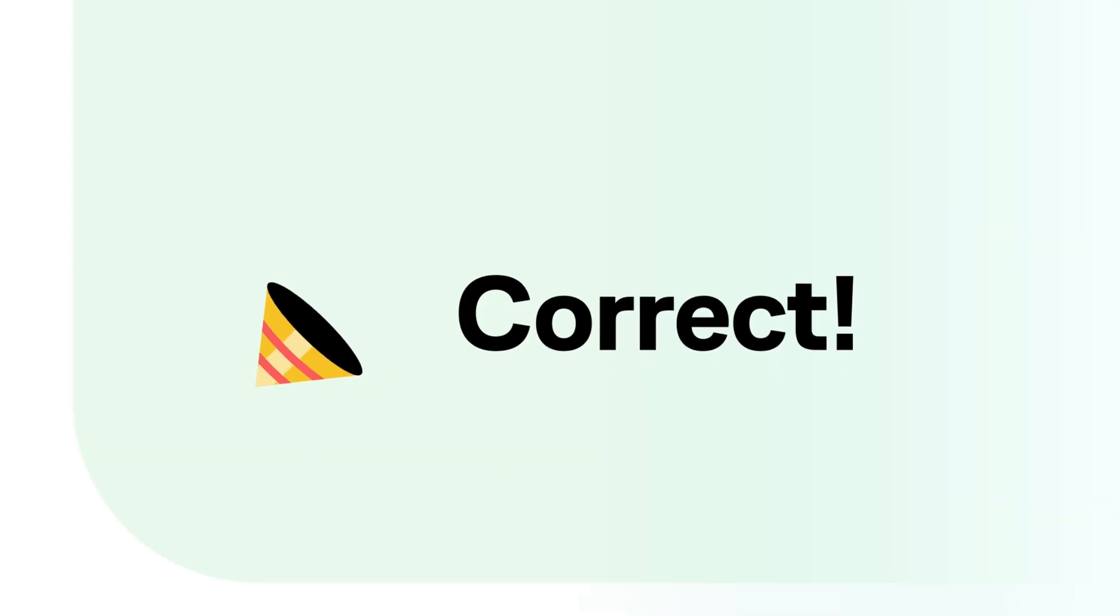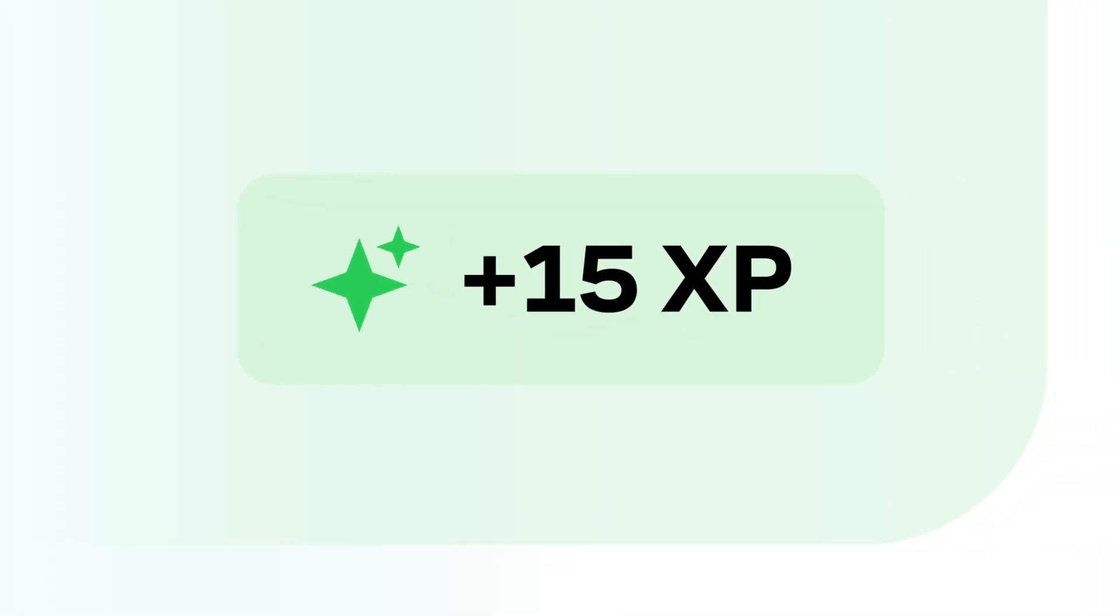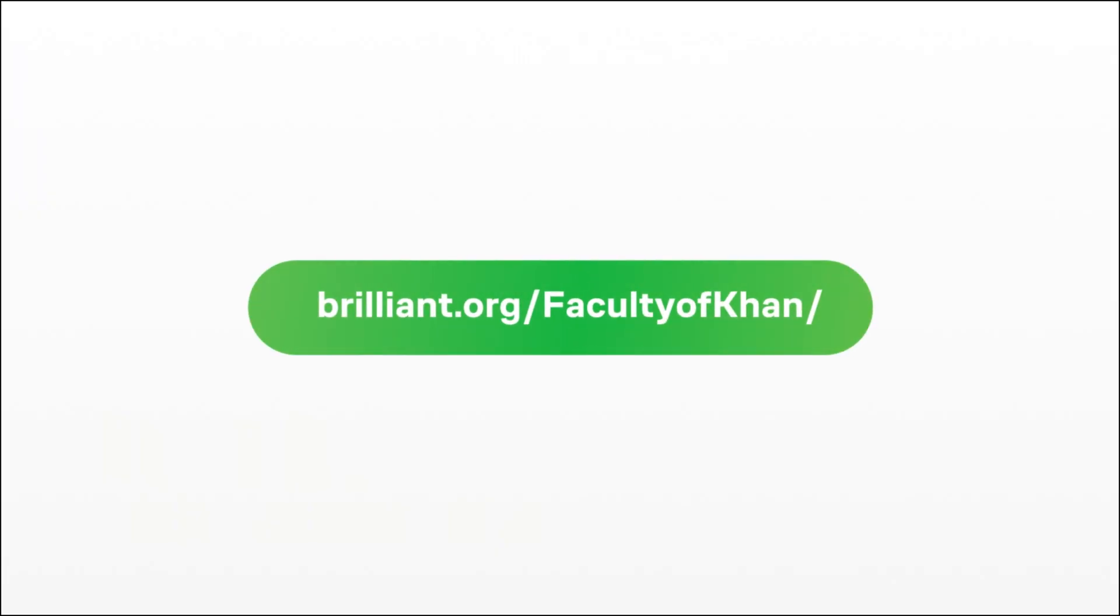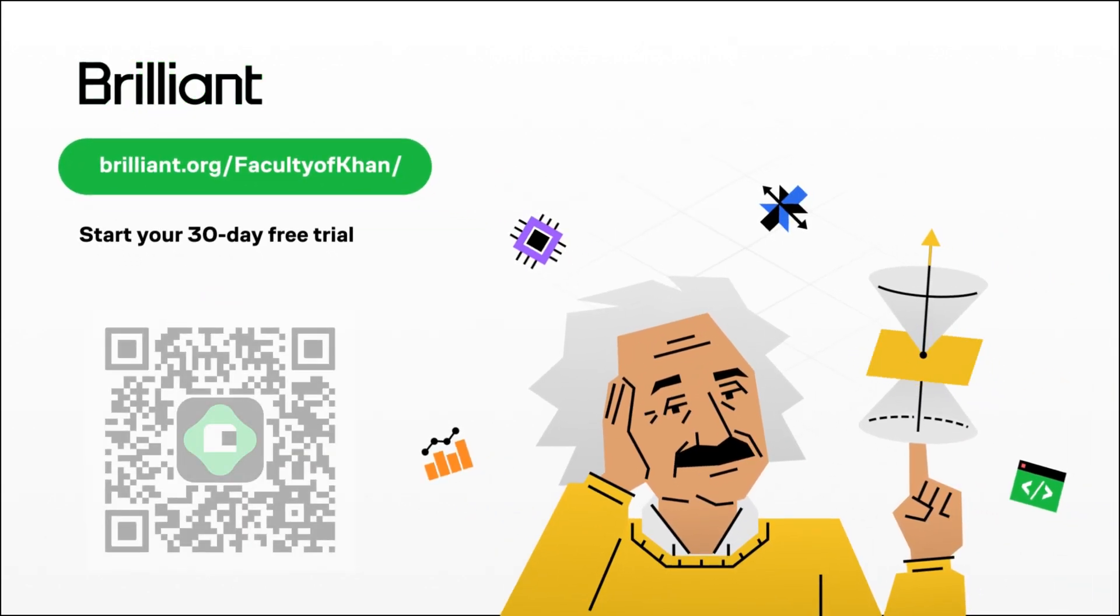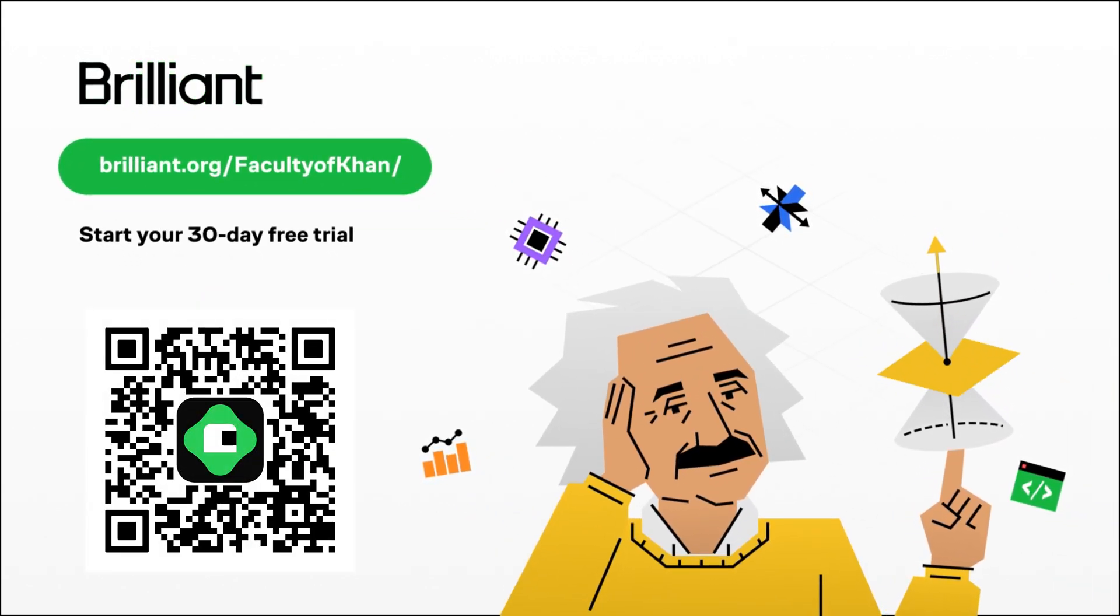To try everything Brilliant has to offer free for a full 30 days visit brilliant.org/facultyofkhan or scan the QR code on screen or you can click on the link in the description. You'll also get 20% off an annual premium subscription. Thanks for watching.